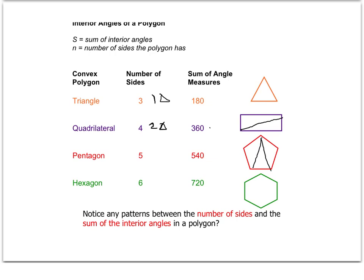Five sides gave us three triangles, which was 540 degrees, 180 times 3, and lastly, we did a hexagon, which created four triangles. Four times 180 was 720.